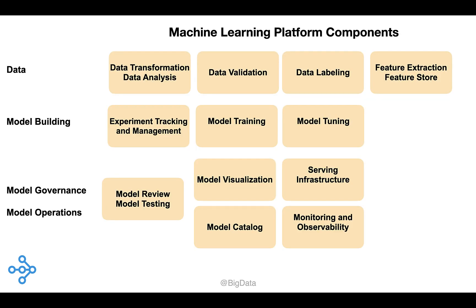A machine learning platform consists of many components. At a high level, this includes tools for working with data and identifying and managing features used in models, tools for model selection, training, and testing, and tools for model governance and model operations.